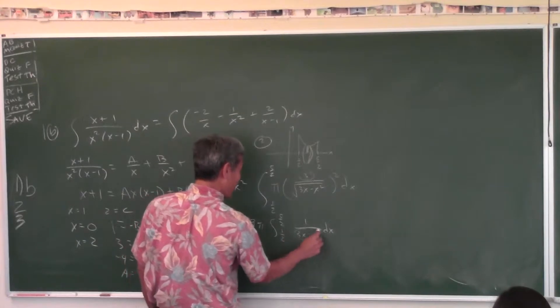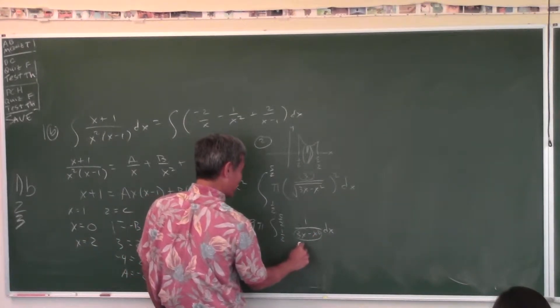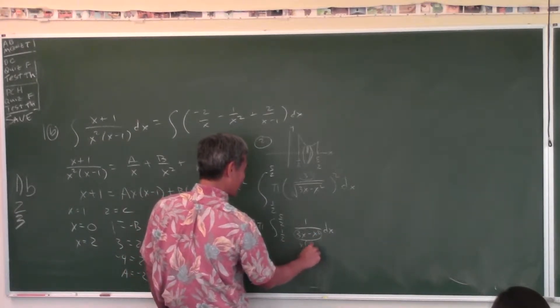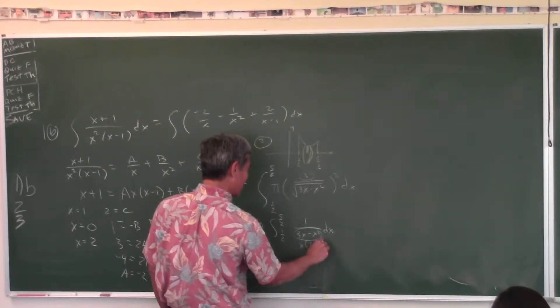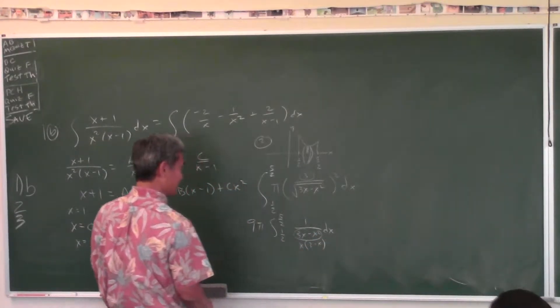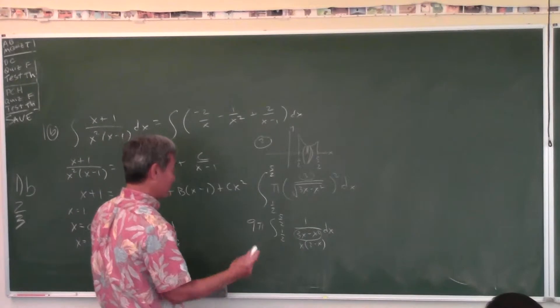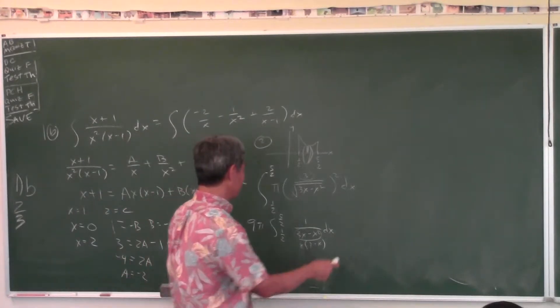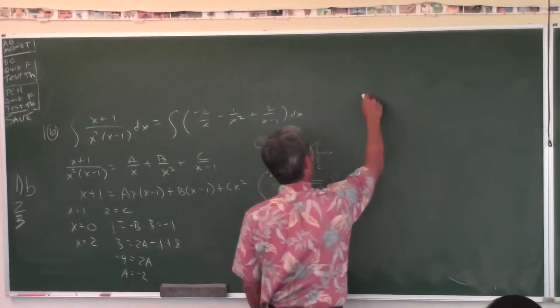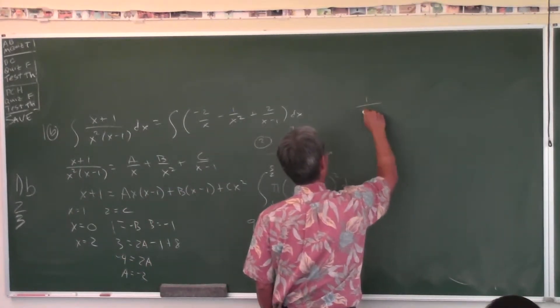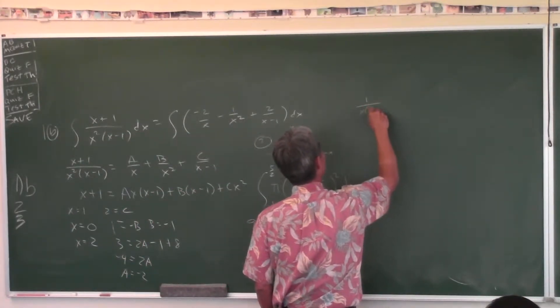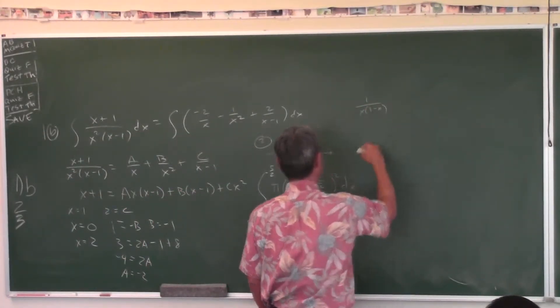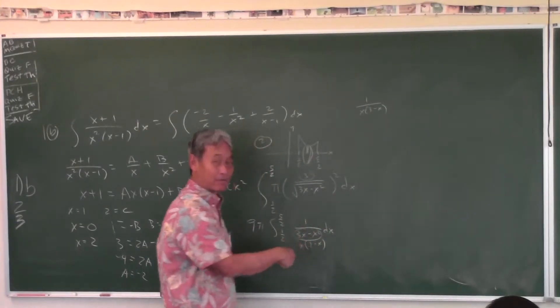Then you get the integral of 1 over (3X minus X squared) dx, which can be factored as X times (3 minus X). So now we just do partial fractions on 1 over X(3 minus X).